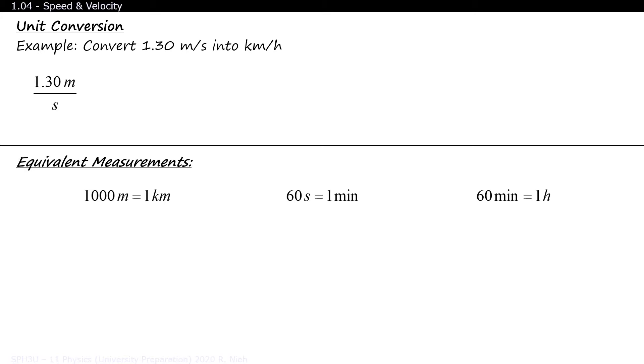Each of these measurements can be written as an improper fraction. For example, 1,000 meters in 1 kilometer can be written as 1,000 meters over 1 kilometer, or 1 kilometer over 1,000 meters. The fraction that we choose is based upon which unit we want to get rid of. We can write improper fractions for the other two equivalent measurements as well.